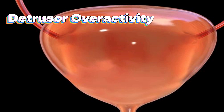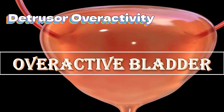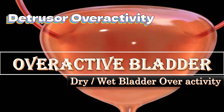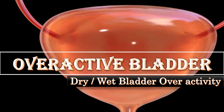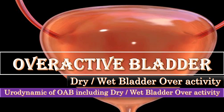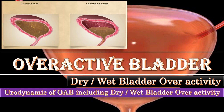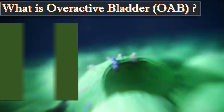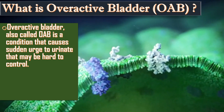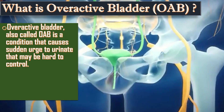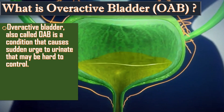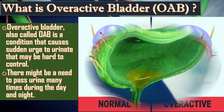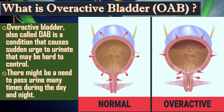Overactive bladder is the topic of our discussion today. Here we will talk about dry and wet bladder overactivity, and I will explain the urodynamics of overactive bladder including dry and wet bladder overactivity. Overactive bladder, also called OAB, is a condition that causes a sudden urge to urinate that may be hard to control. There might be a need to pass urine many times during the day and night.